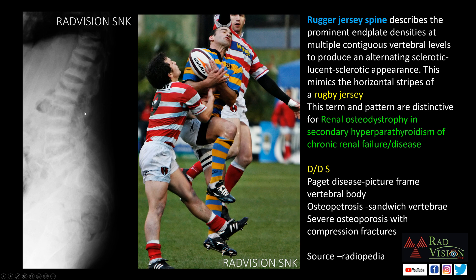Rugger jersey spine shows dense alternating sclerotic and lucent zones without bone-in-bone appearance, and with variable bone density — sometimes diffuse density, variable density, or even osteoporosis. Rugger jersey spine is most commonly seen in renal osteodystrophy and secondary hyperparathyroidism of chronic renal failure. Other differentials include Paget's disease, osteopetrosis, and severe osteoporosis with compression fractures.